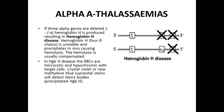The hemolysis is usually compensated by increased bone marrow production. In Hemoglobin H disease, RBCs are microcytic hypochromic with target cells. With crystal violet or new methylene blue supravital staining, Heinz bodies — the precipitated Hemoglobin H — can be detected. These Heinz bodies are the precipitated beta chains in excess which have aggregated within the RBCs.